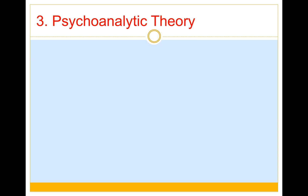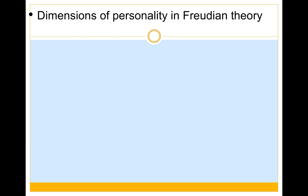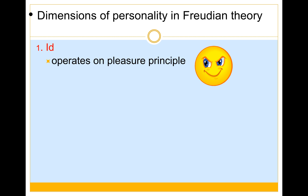Psychoanalytic theory is an unusual theory of personality developed by Freud, with emphasis on unconscious conflicts in early childhood. In Freudian theory, most of our personality is unconscious. Two parts of the personality that are unconscious are the id and the superego. The id operates on the pleasure principle — it's the part of you that pushes you to do whatever feels good, like procrastinating on homework by watching a movie without thinking about the consequences.